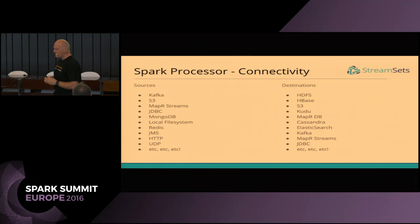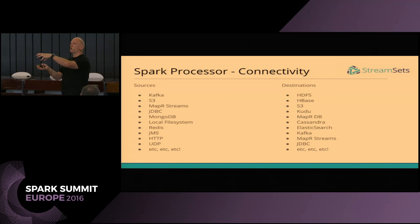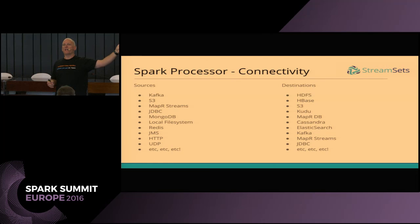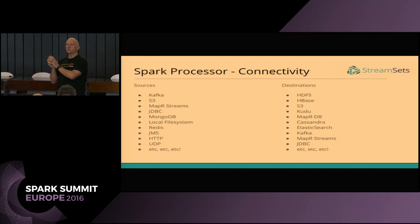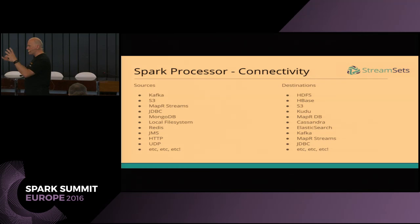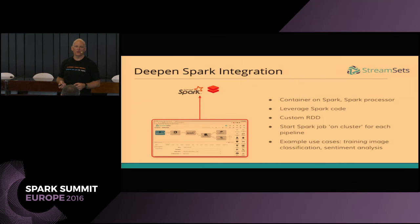The big advantage of this is broad connectivity. Every origin we can talk to, you can bring your Spark code to bear on, and every destination we can write to. So you could read from a web service with HTTP, ingest Twitter and act on it with Spark code in Java, then write it to S3 — that's one I've done with Star Wars tweets. You get to drop your code into the middle of a pipeline, and then we're going to deepen the Spark integration by bringing these two branches together.